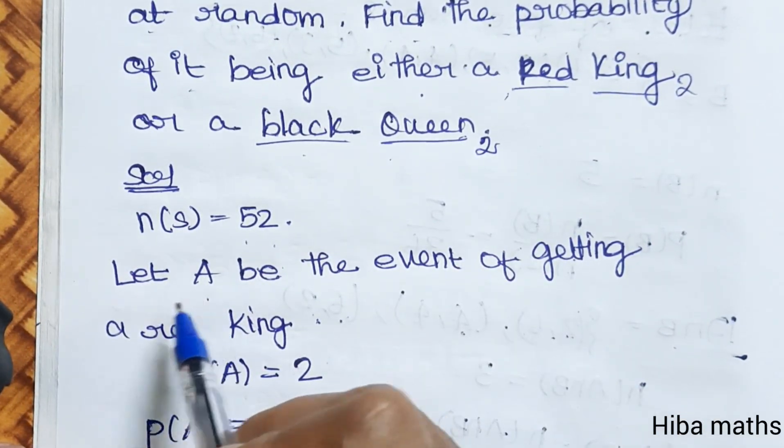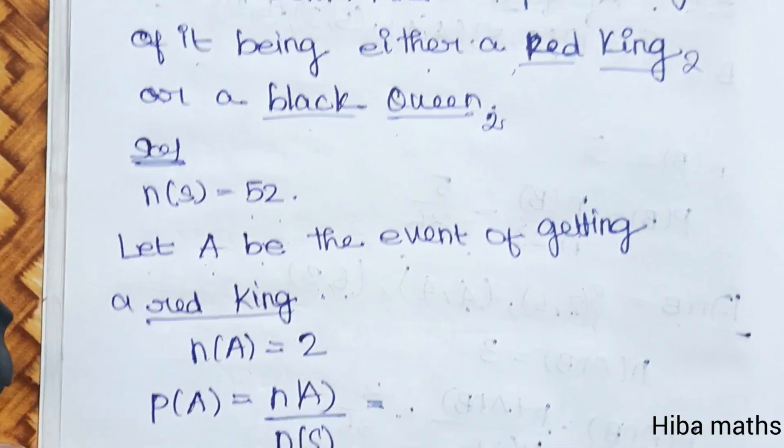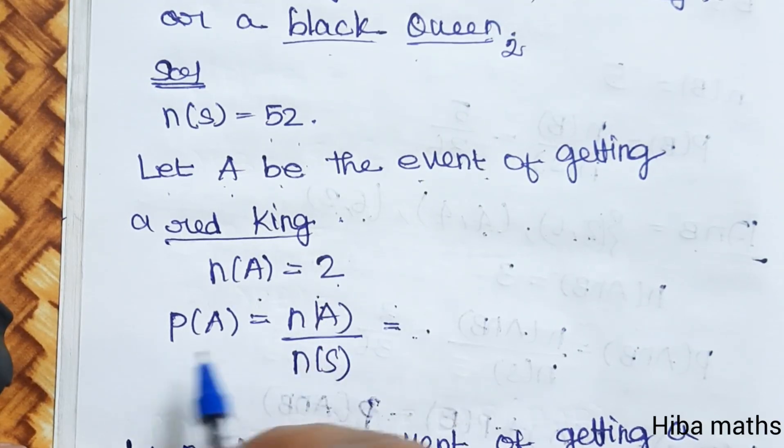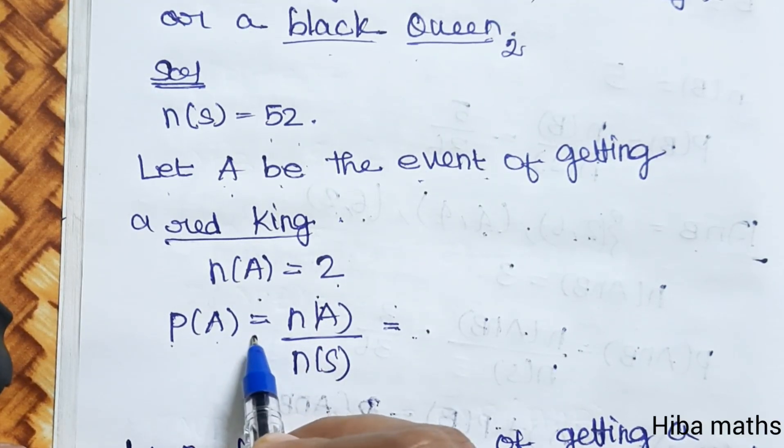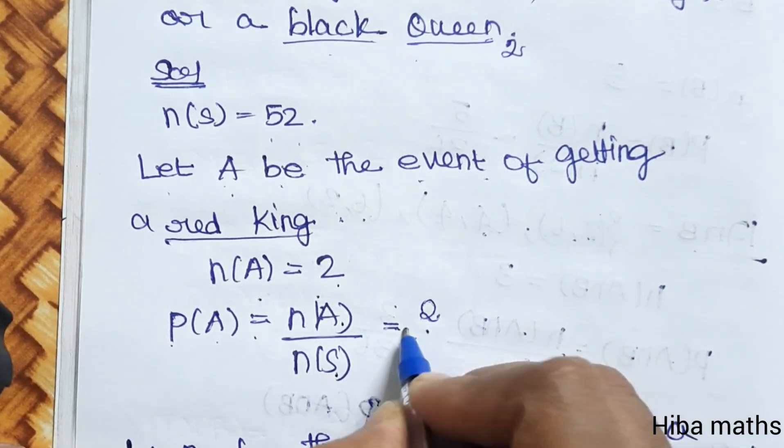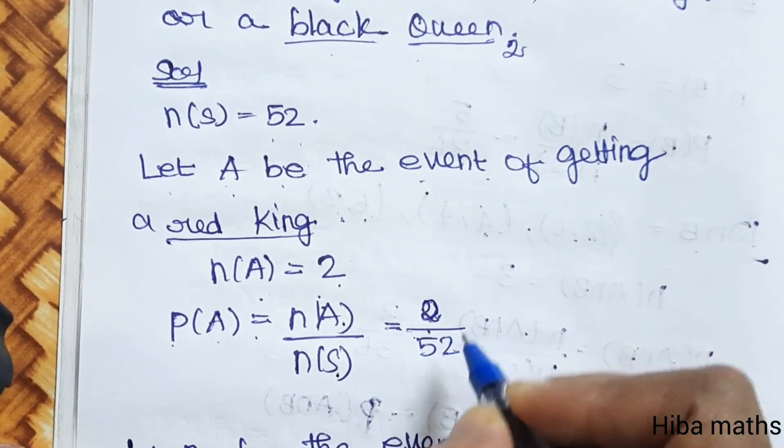What do you call red king? Let A be the event of getting a red king. Red king is 2, so N(A) is 2. Then P(A) is N(A) by N(S). N(A) is 2, N(S) is 52. Canceled, the denominator is equal.